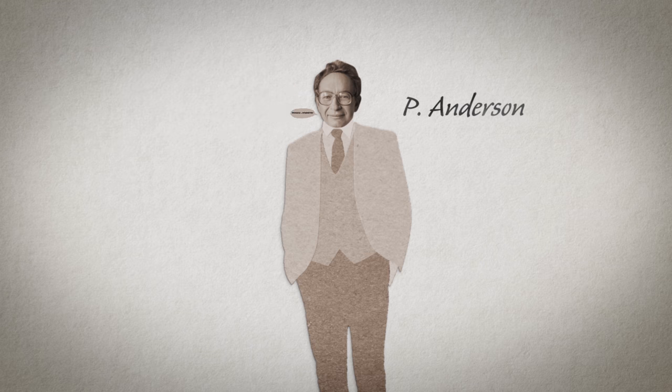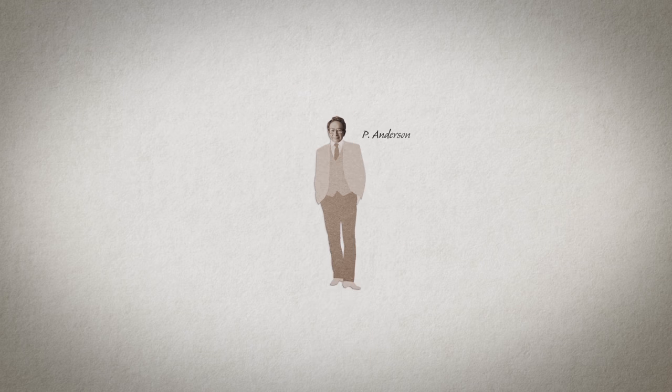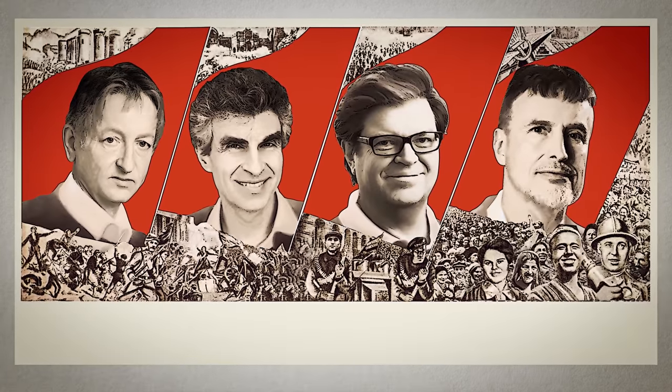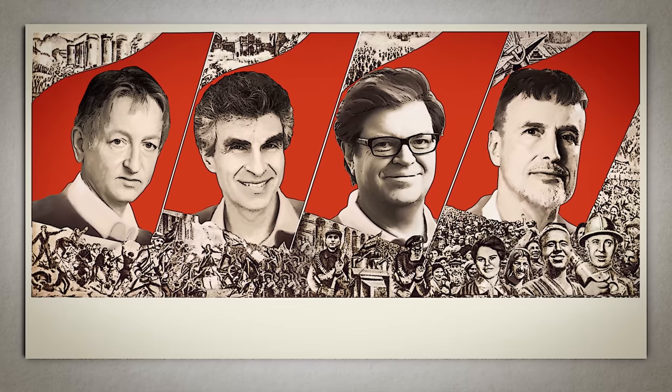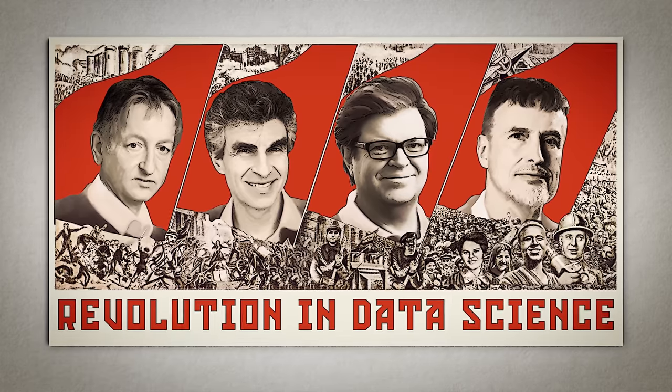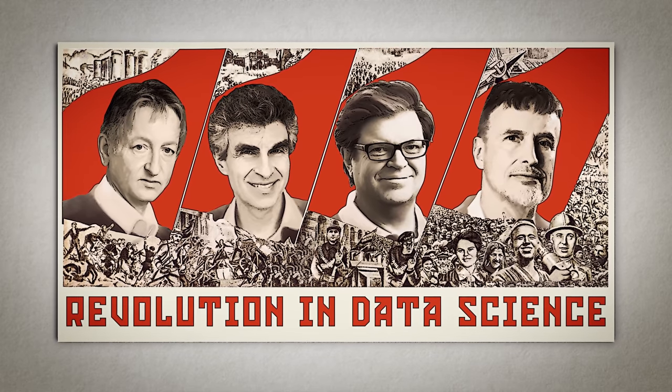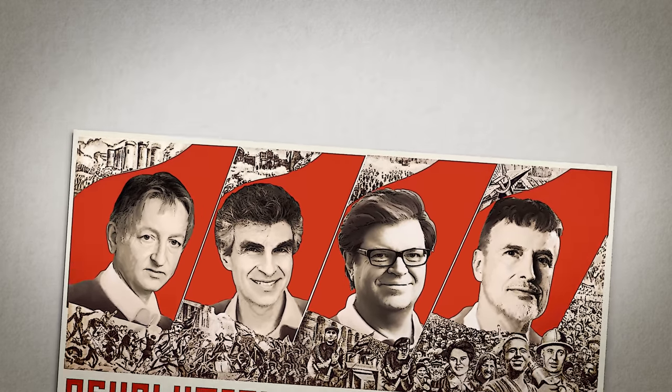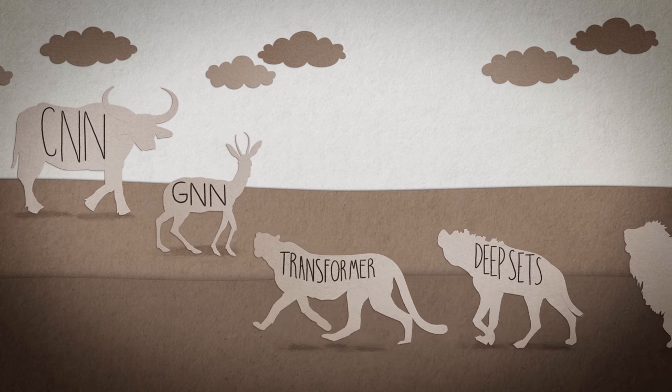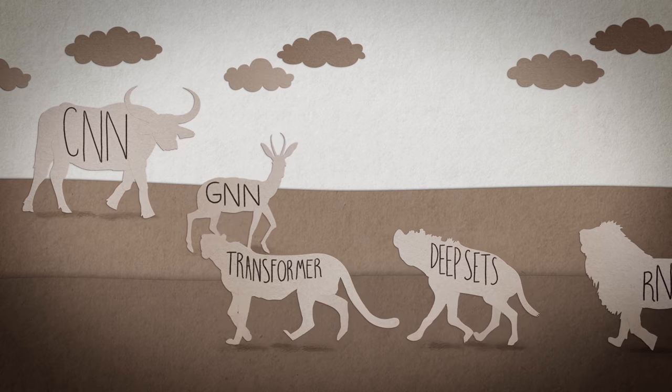You may wonder at this point, what does it all have to do with deep learning? I believe that the current state of affairs in deep learning reminds a lot the situation in geometry in the 19th century. On one hand, in the past decade, deep learning has brought a revolution in data science and made possible many tasks previously thought to be beyond reach. On the other hand, we now have a zoo of different neural network architectures for different types of data, but few unifying principles.